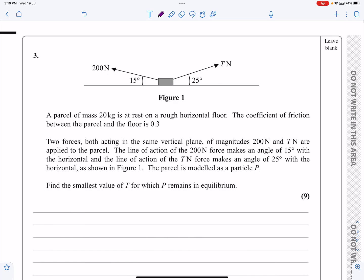Okay, this is the M1 paper for January 2021, question number three. It's an equilibrium question, statics, where we've got friction involved.